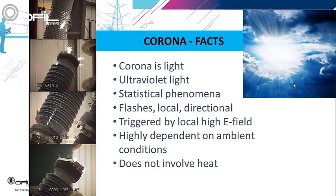Ultraviolet, being a short wavelength, has a high scattering coefficient. Scattering means fewer corona photons arrive at the detector. Scattering is inversely proportional to the fourth power of wavelength. As such, at UVC 240 to 280 nanometers — where corona cameras operate — the losses due to scattering are 20 times greater than in the visible range.